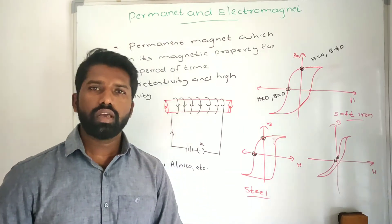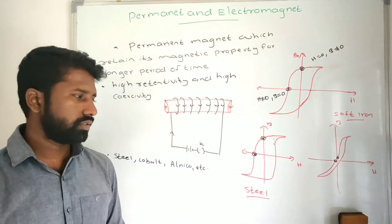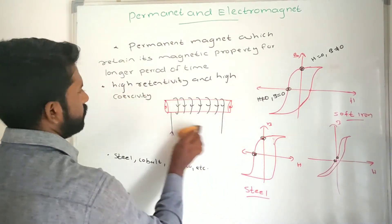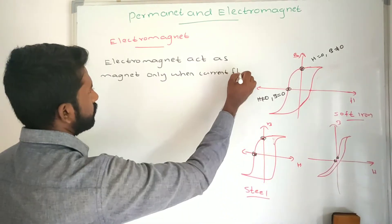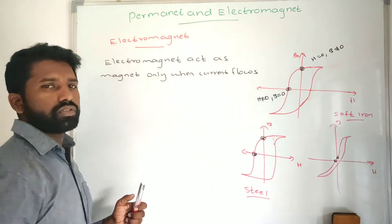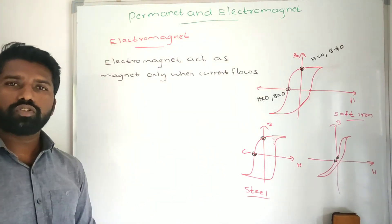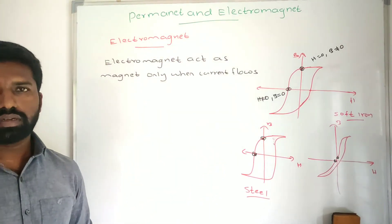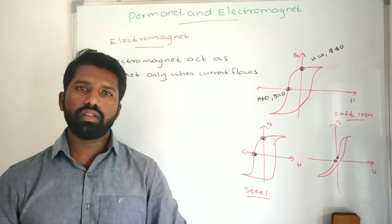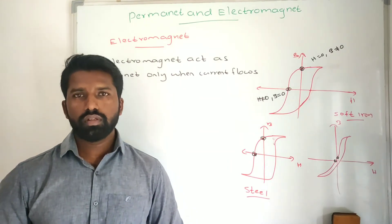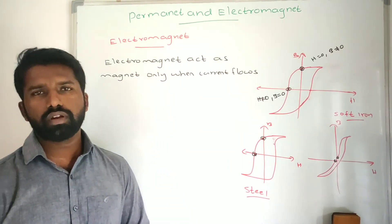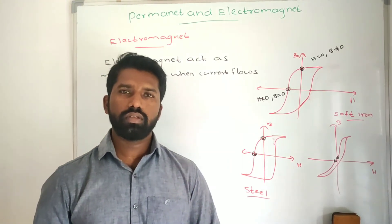Now we will see electromagnets. An electromagnet acts as a magnet only when current flows through it. Electromagnets are used in many different applications.